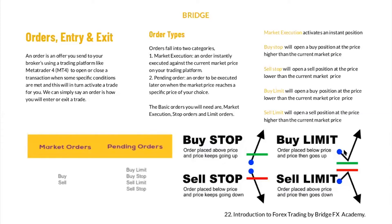An example of a limit order is a buy limit. The blue dot shows the current market price. We want to buy, but the market price is above our desired entry. So we set an order telling the market to wait — go down to this particular point, test these limits, bounce off those limits, and start buying for me. When it reaches the take profit level at the top, take profit. If it keeps going down to the stop loss, stop me out in loss.